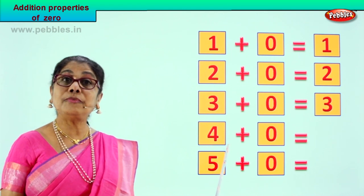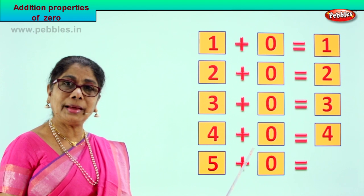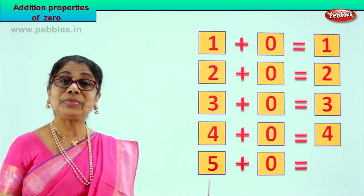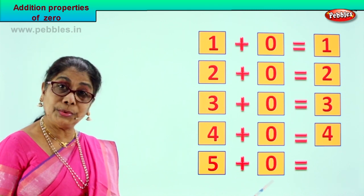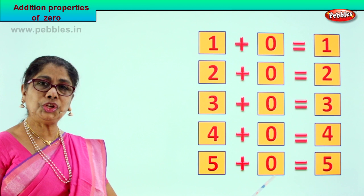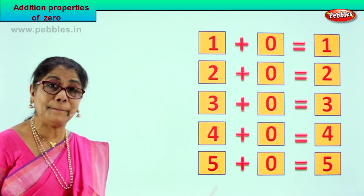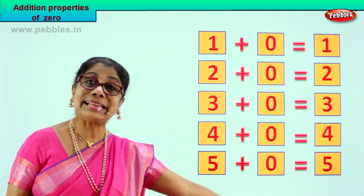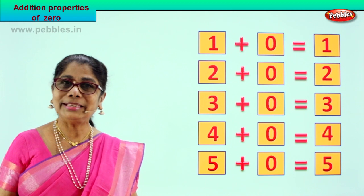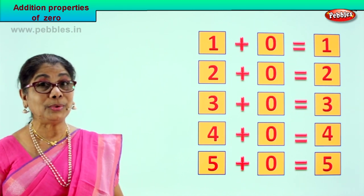Let's take the next one. Number four plus zero is equal to four itself. Finally, let's look at the last exercise: five plus zero is equal to five. What do we see here? Any number — one, two, three, four — any number plus zero will give you the same number. Did you understand that concept? Good. Shall we take another exercise and do some more to understand the concept of zero in addition?